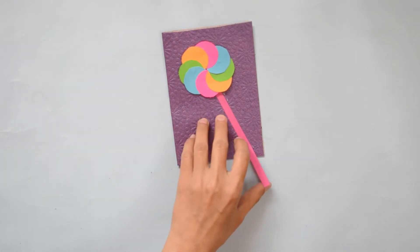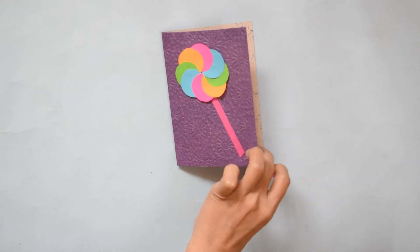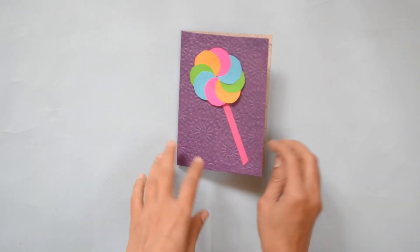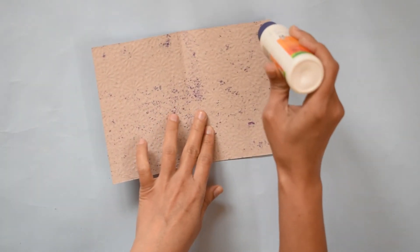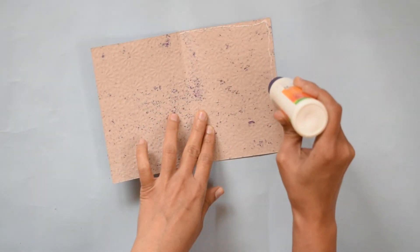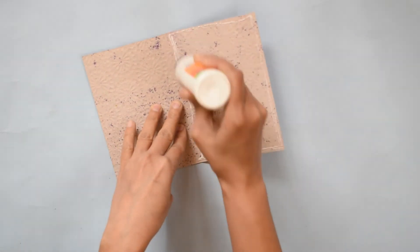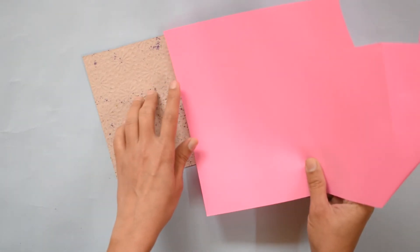Cut the extra paper. Now open the card and place glue like this and stick pink paper inside it.